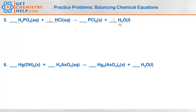Let's double check: hydrogen, phosphorus, oxygen, and chlorine. Three plus five is eight hydrogens on the reactants; four times two is eight on the products. One phosphorus on each side. Four oxygens on each side. Five chlorines on each side. The key to this one was recognizing that hydrogen appeared in two different substances on the same side, so we balanced it last.